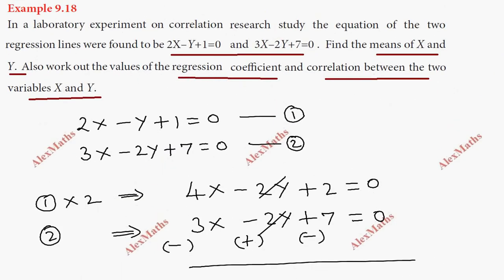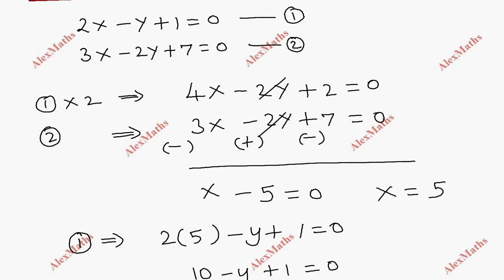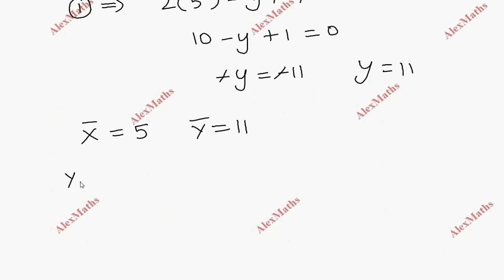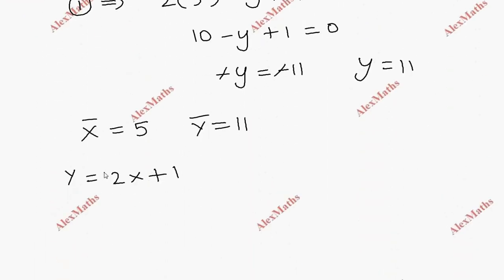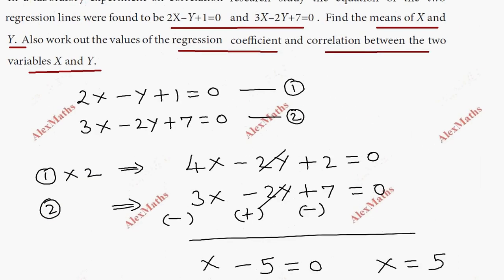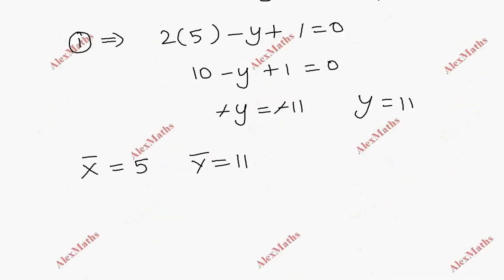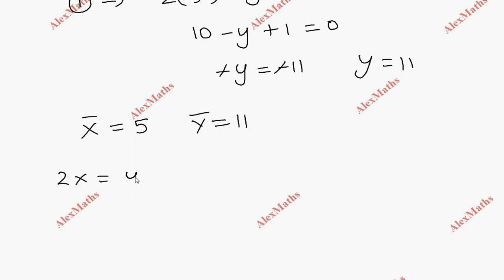Now for the regression coefficients. From the first equation 2x - y + 1 = 0, we express y: y = 2x + 1, so the regression coefficient byx = 2. From the second equation 3x - 2y + 7 = 0, we express x: x = (2y - 7) / 3, so bxy = 2/3.